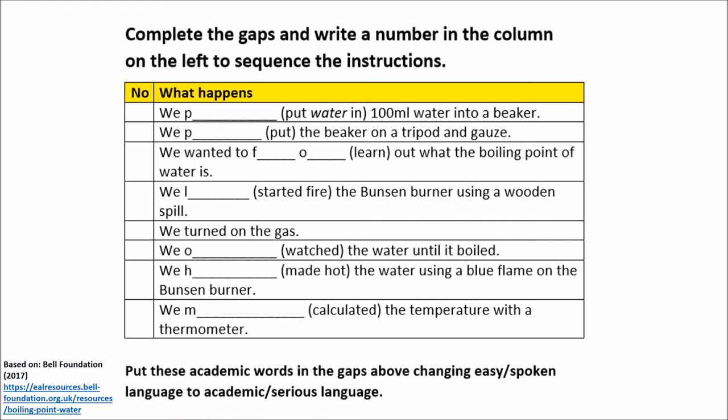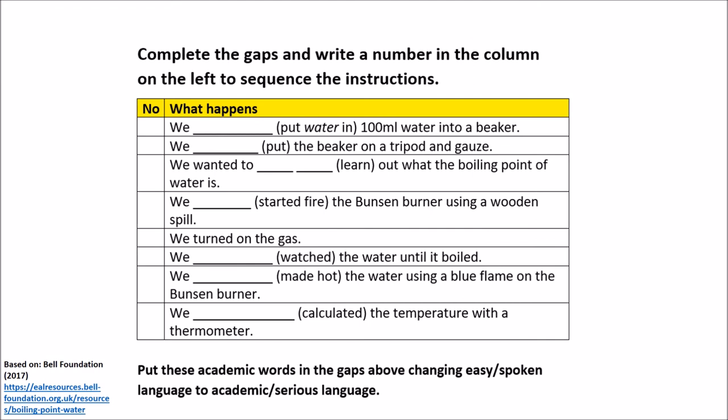The orange, so middle level, gets a slightly different task. Here, as you can see, there is no box with words anymore, but the gaps have the first letter of the desired word. Like the lowest group, they need to sequence these sentences.